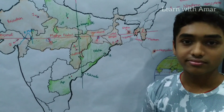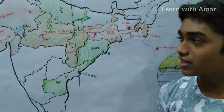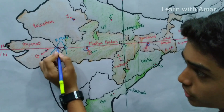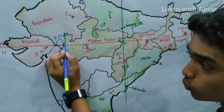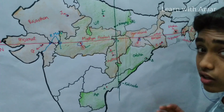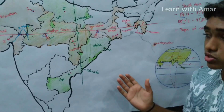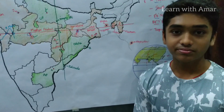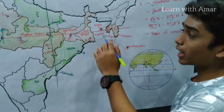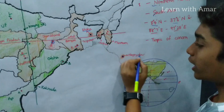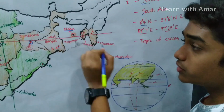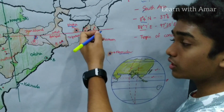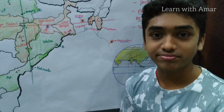Name the river that crosses the Tropic of Cancer twice. River Mahi crosses the Tropic of Cancer twice, just like river Congo, which crosses the equator twice. What about Dhaka and Naypyidaw? Dhaka, the capital city of Bangladesh, and Naypyidaw, the capital city of Myanmar — Dhaka is situated to the north of the Tropic of Cancer and Naypyidaw is situated to the south of the Tropic of Cancer.